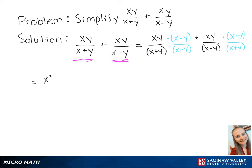This is going to give us x squared y minus xy squared over x squared minus y squared plus x squared y plus xy squared over x squared minus y squared.